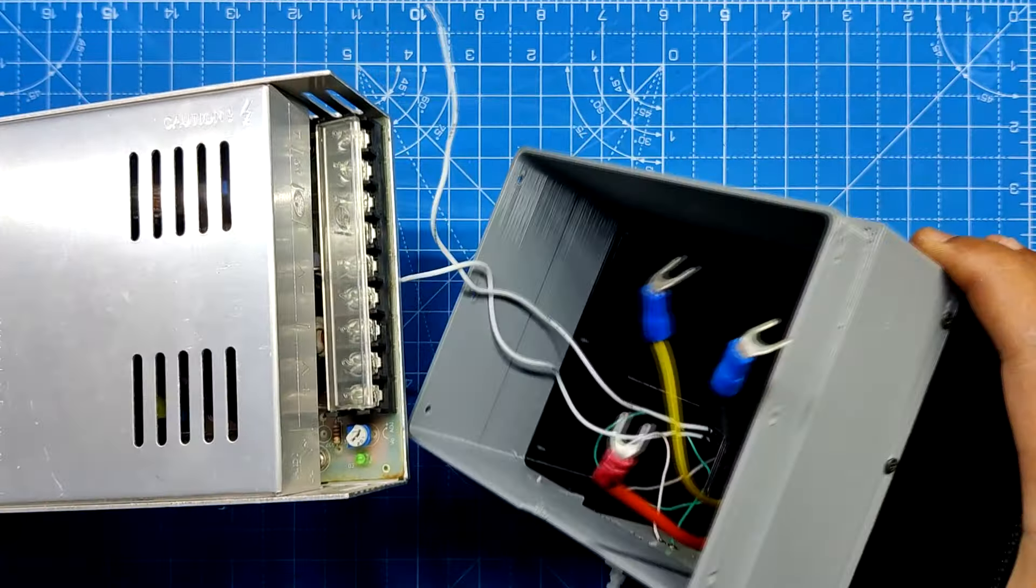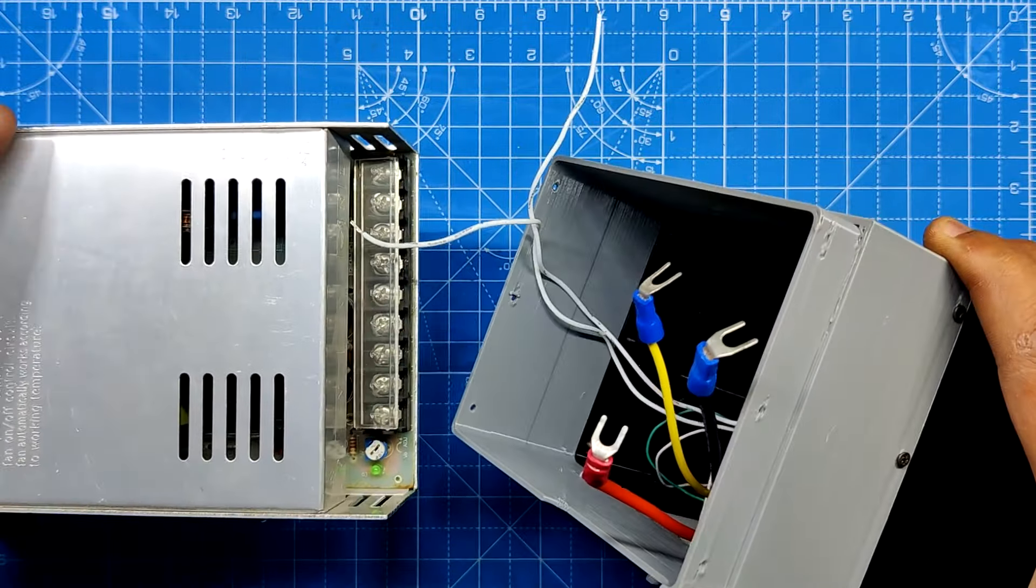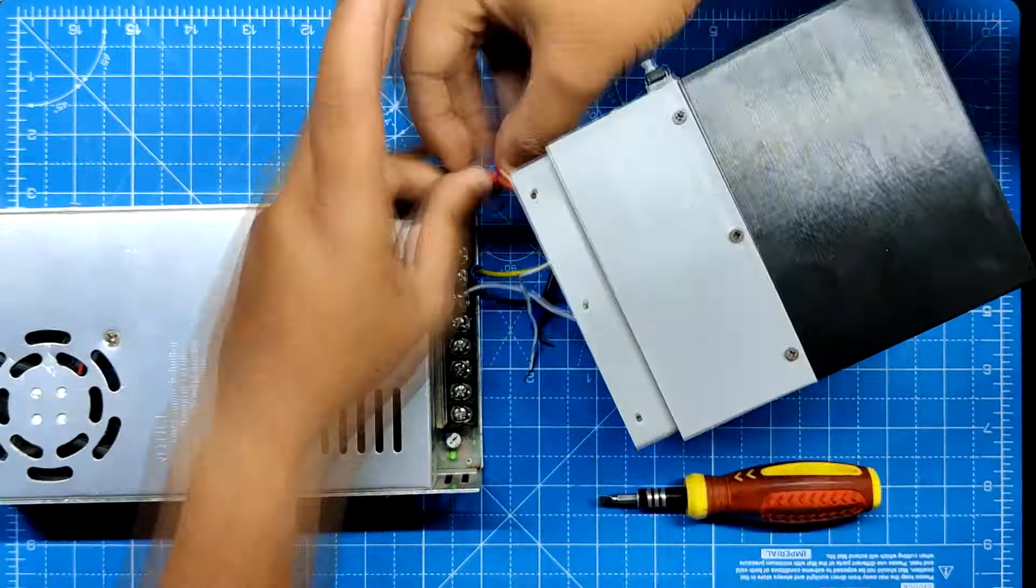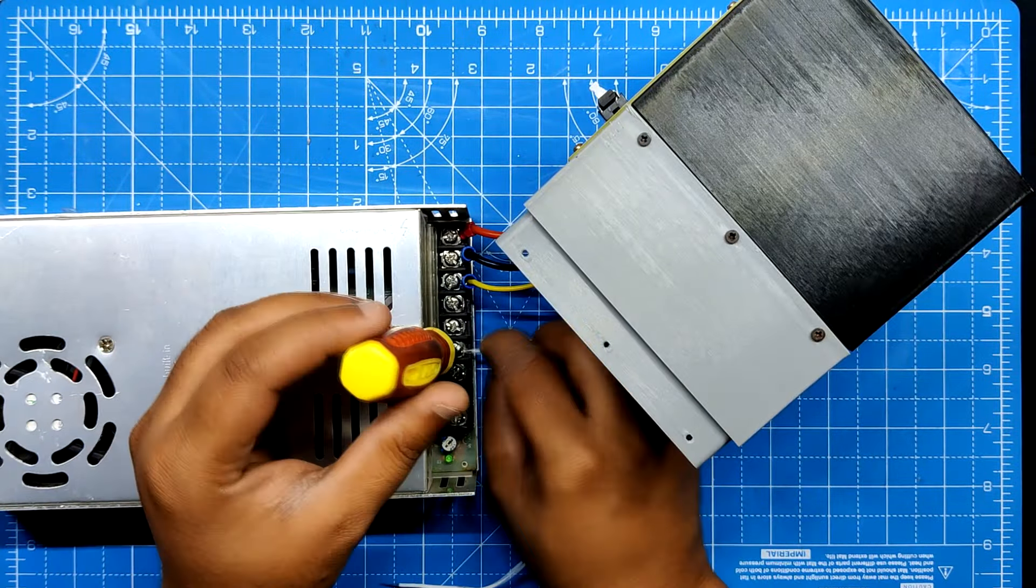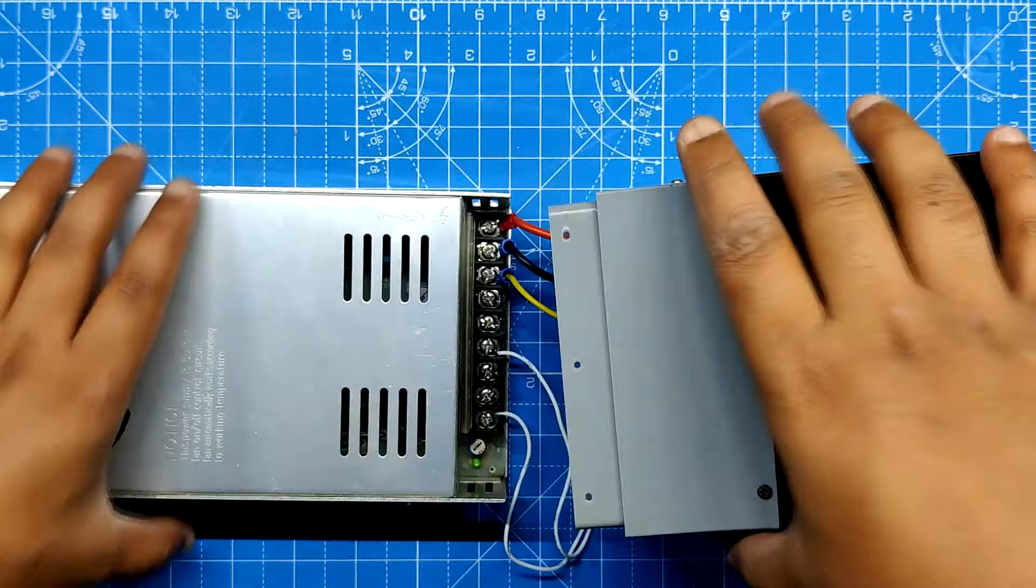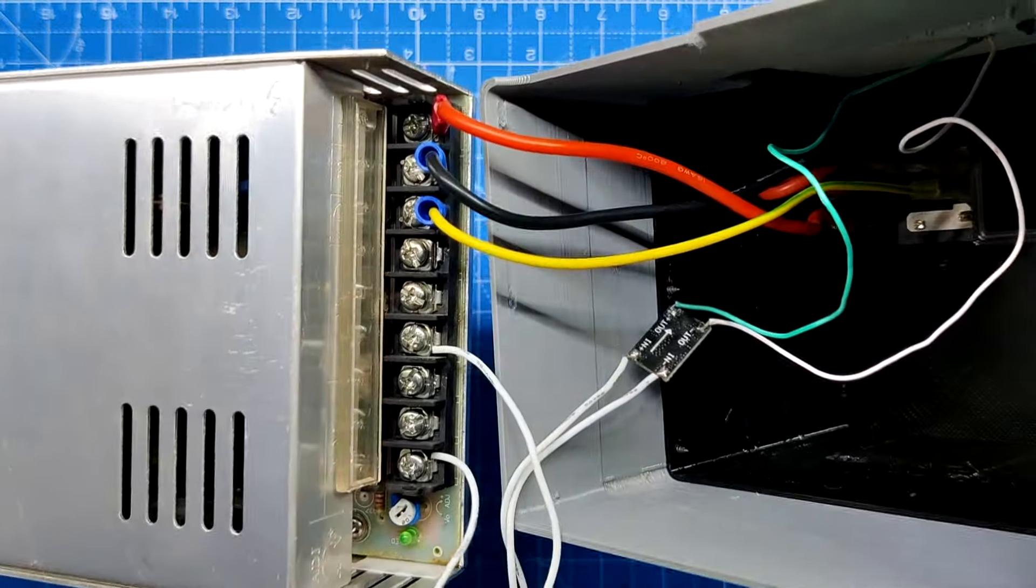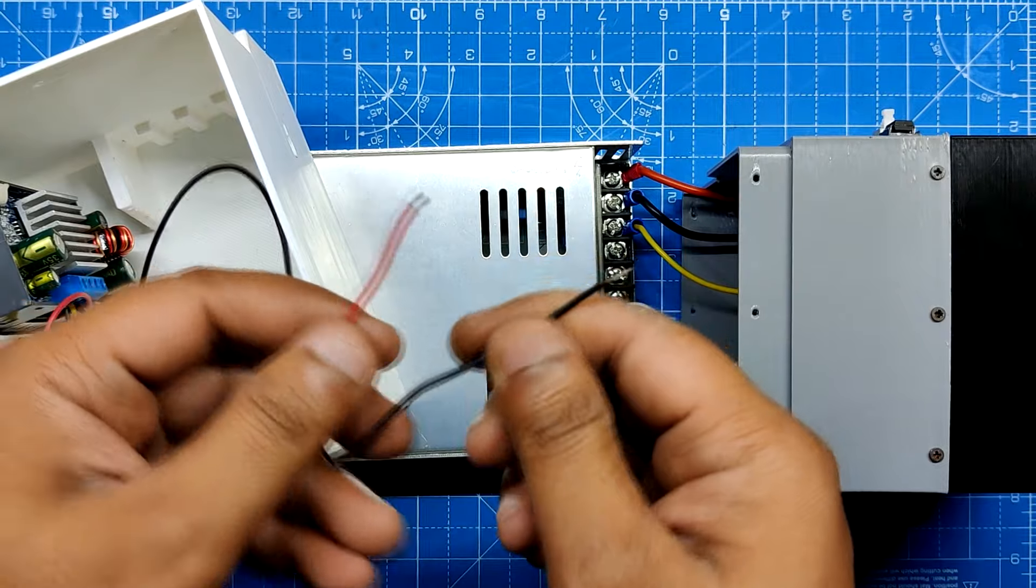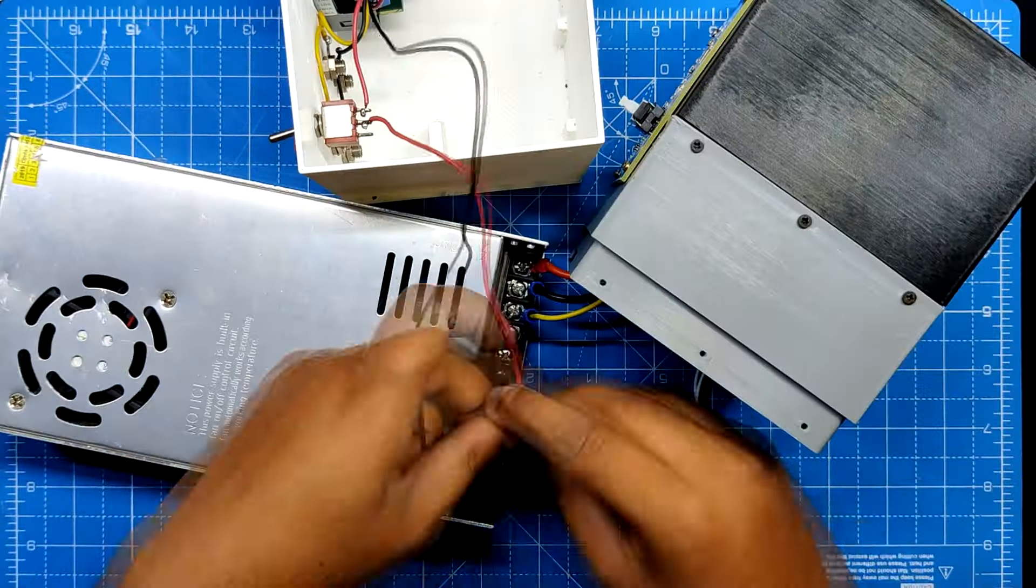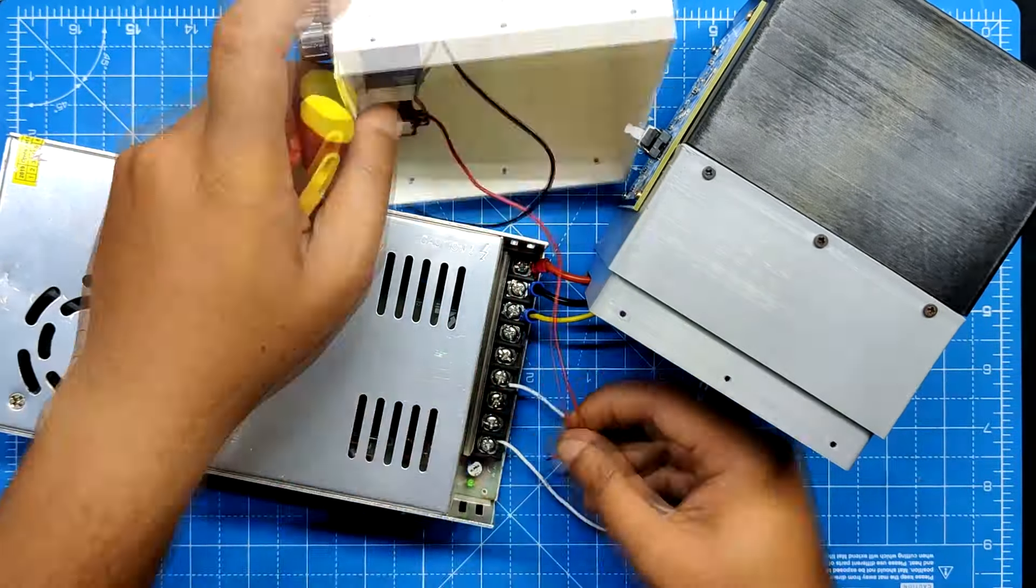The live, neutral, and the ground wire are connected to the SMPS terminals to initiate the final assembly process. The DC-DC buck module's positive and negative were then connected to the SMPS 24 volt and ground terminals. Next, we connected the ZK4KX input terminal to the SMPS 24 volt and ground terminals.